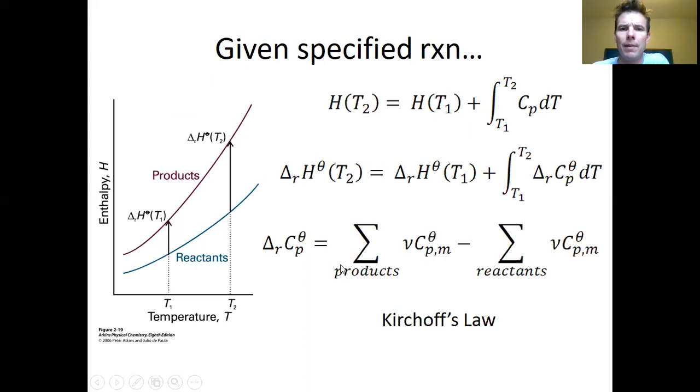So, this has a specific name. It's called Kirchhoff's law. This is the same Kirchhoff who did the circuit stuff in physics. This is Atkins picture of it. It's the same sort of thing. Products and reactants at two different temperatures. This is the expression for the enthalpy at different temperatures. In my derivation, I assumed that Cp was constant. That may not necessarily be the case.